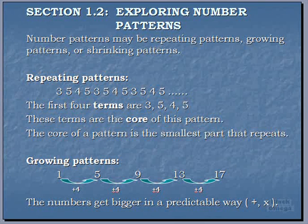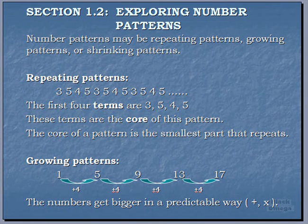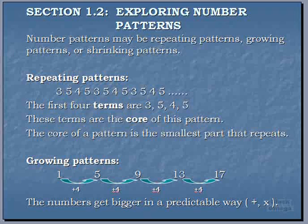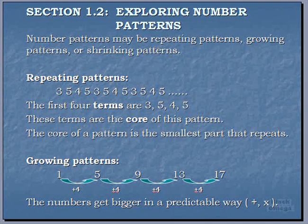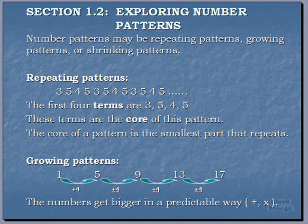Meaning we know that the next number is going to be plus 4 away from the 17. So our number pattern here is 1, 5, 9, 13, 17. So if you look here at our diagram, you add 4 every time to find out the next number. So it's a growing pattern because it's getting bigger, but it's predictable because we know after the 17, if we add 4, we get our next number, which is 21.